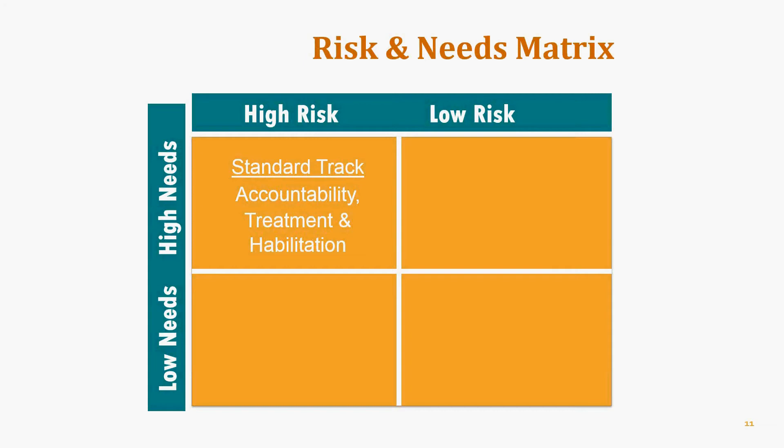For the upper right quadrant — high needs but without the risk factors that portend treatment failure — you can put people on a more treatment-oriented track focusing on substance abuse and mental health treatment as well as habilitation services like job training and literacy. However, the last thing you would want is to have people in the upper left quadrant treated together with those in the upper right quadrant, because when you mix risk levels, you make people worse.